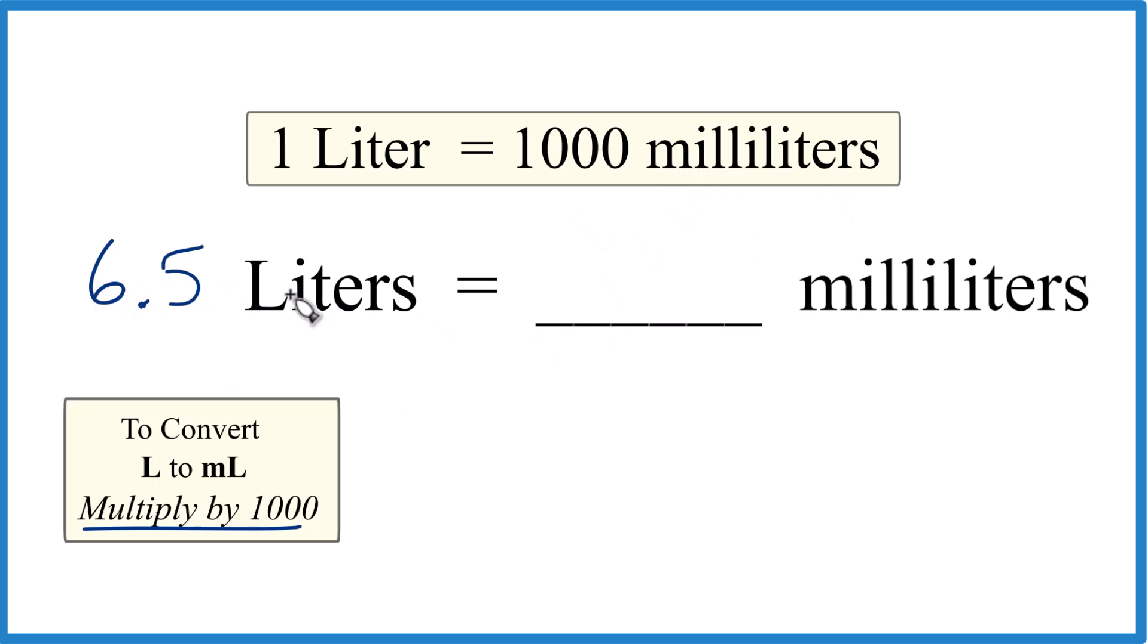In fact, we just take 6.5 liters. When we're going from liters to milliliters, we multiply those liters times 1,000. So we'll take 6.5 liters and we'll multiply that times 1,000.